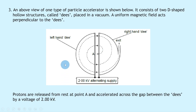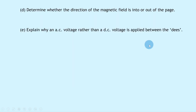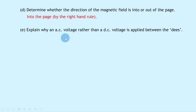However, we're dealing with protons, which are positively charged particles. The right-hand rule as used here applies to negatively charged particles, so for positive charges we must reverse the direction at the end. Since the right-hand rule gives out of the page, we reverse this to get into the page. Therefore the magnetic field direction is into the page.